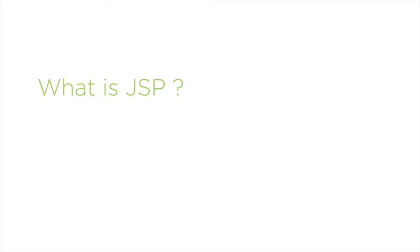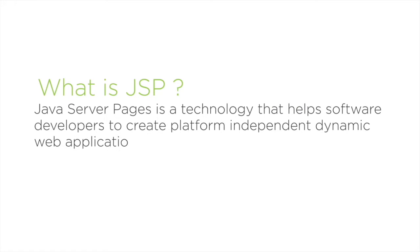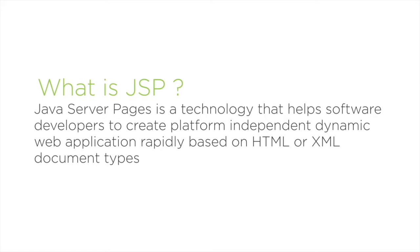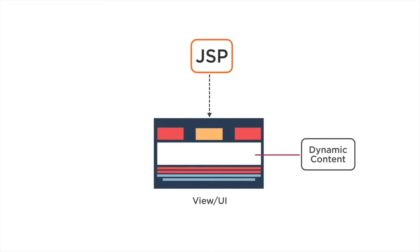Now let us understand what is JSP. Java Server Pages is a technology that helps software developers to create platform-independent dynamic web applications rapidly based on HTML or XML document types. JSP technology separates the user interface from content generation, which enables designers to change the overall page layout without altering the underlying dynamic content.